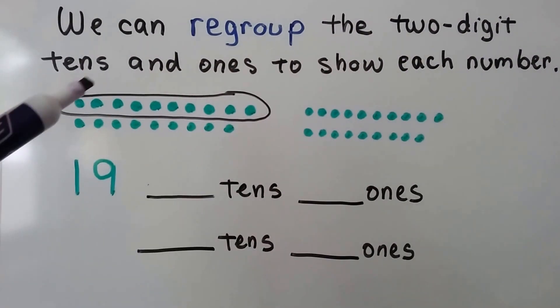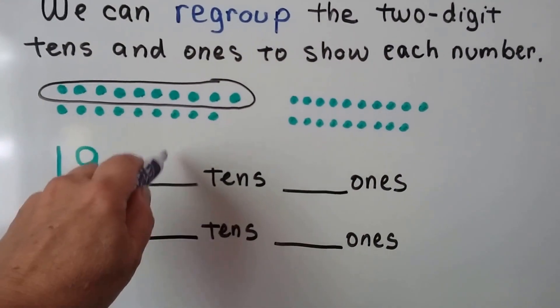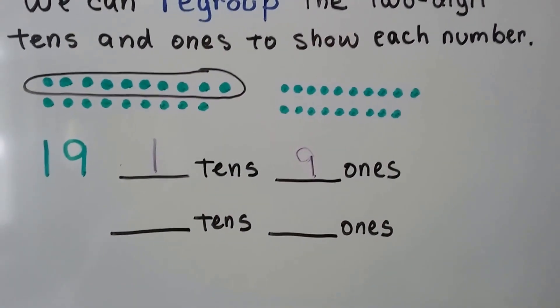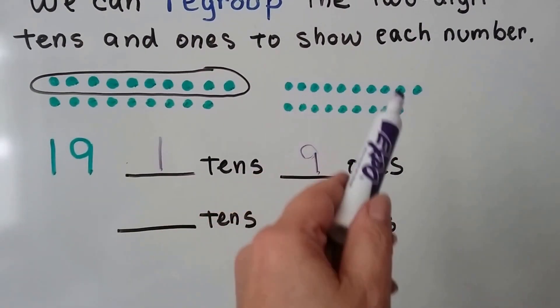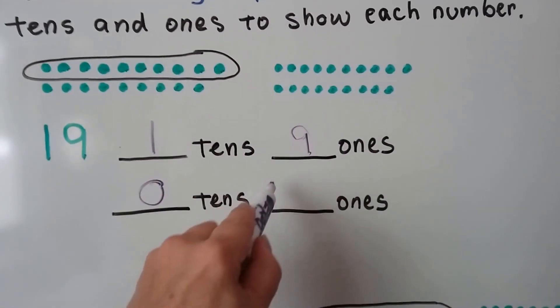Right here, and 9 ones. We have one ten and 9 ones. We can also show it as no tens and 19 ones.